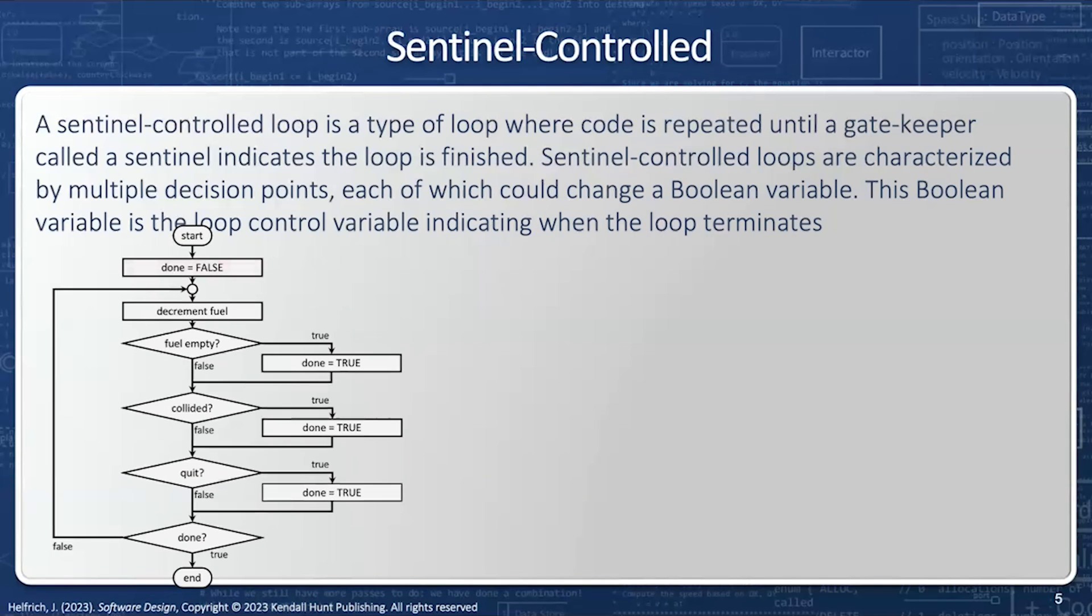Here's an example of a sentinel control loop. First, we have our sentinel initialized to false, and now we have our loop body, which is only going to look at the sentinel. And then we have a collection of statements, each of which could possibly set the done equals false.